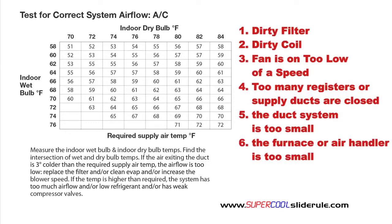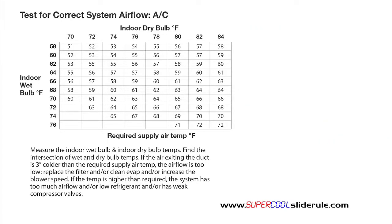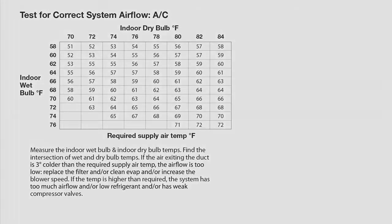Six, the furnace or the air handler is too small; and seven, the coil is too small for the condensing unit. This concludes our tutorial on testing for correct system airflow AC. Now stand by and watch a very brief video on the super cool tool, best tool in the air conditioning industry. Thank you.